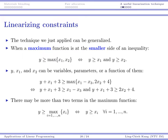In general, there can be more than two terms in the maximum function. For example, suppose you have x1, x2, up to xn, and your y is required to be greater than or equal to the maximum of x1, x2, up to xn. In that case, you may replace this maximum function by these n inequalities. This can still be linearized.